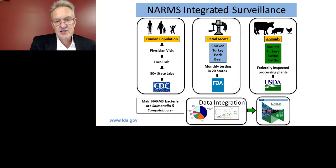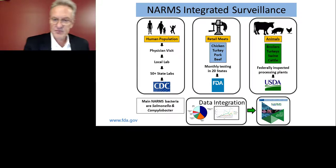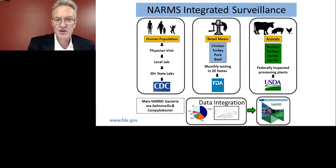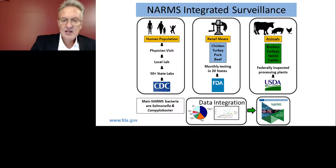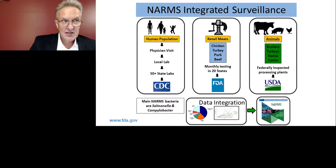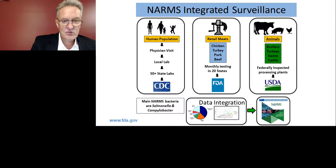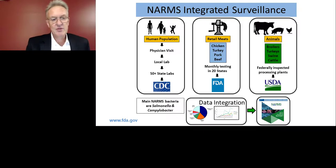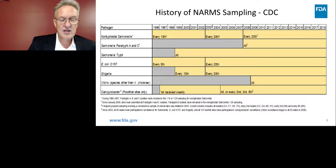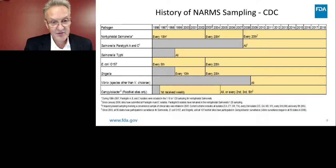We put these data together in a way that tries to make sense of the relationship between drug use on the farm and resistance moving through the food supply. On the food animal side, USDA sampling includes broiler chickens, turkeys, swine, and cattle. On the FDA sampling side, we have the corresponding derived meats. CDC is looking at clinical cases from around the country. We've been at this since 1996 — NARMS is a fairly mature program with a great deal of data, having collected isolate-level information on a couple hundred thousand organisms, published in annual reports online.